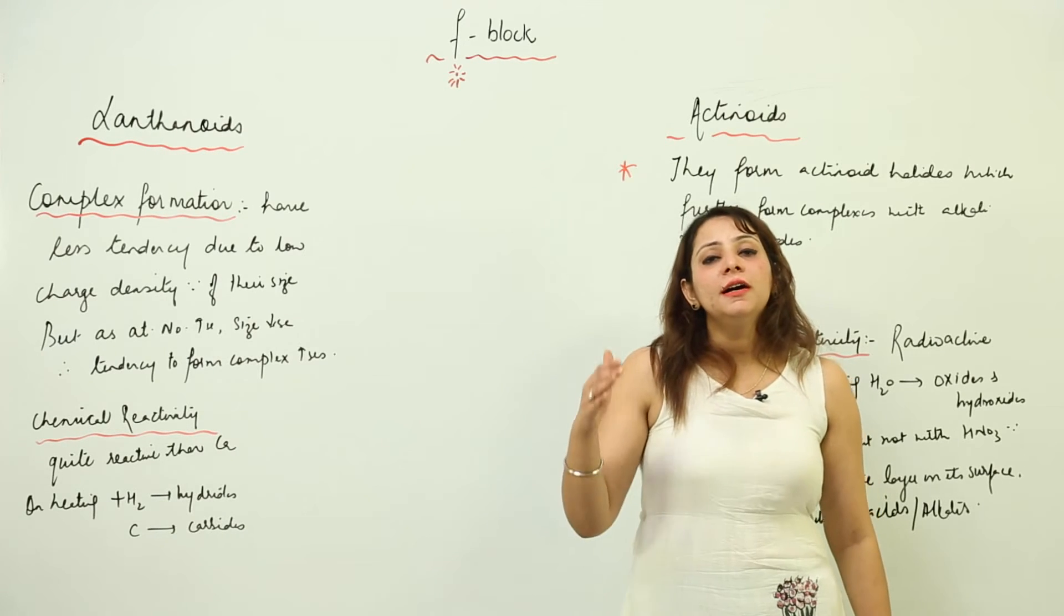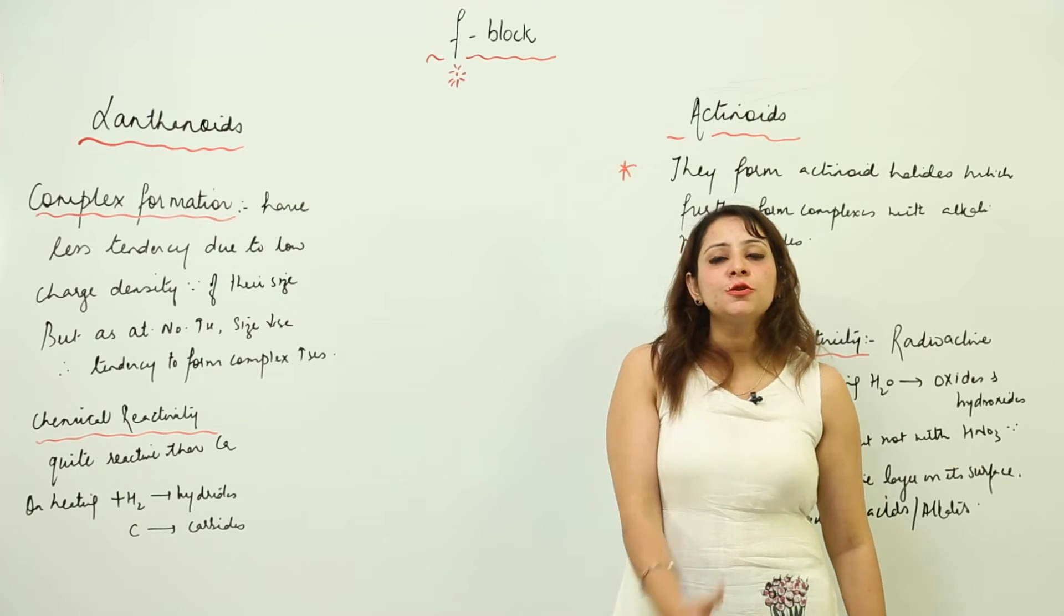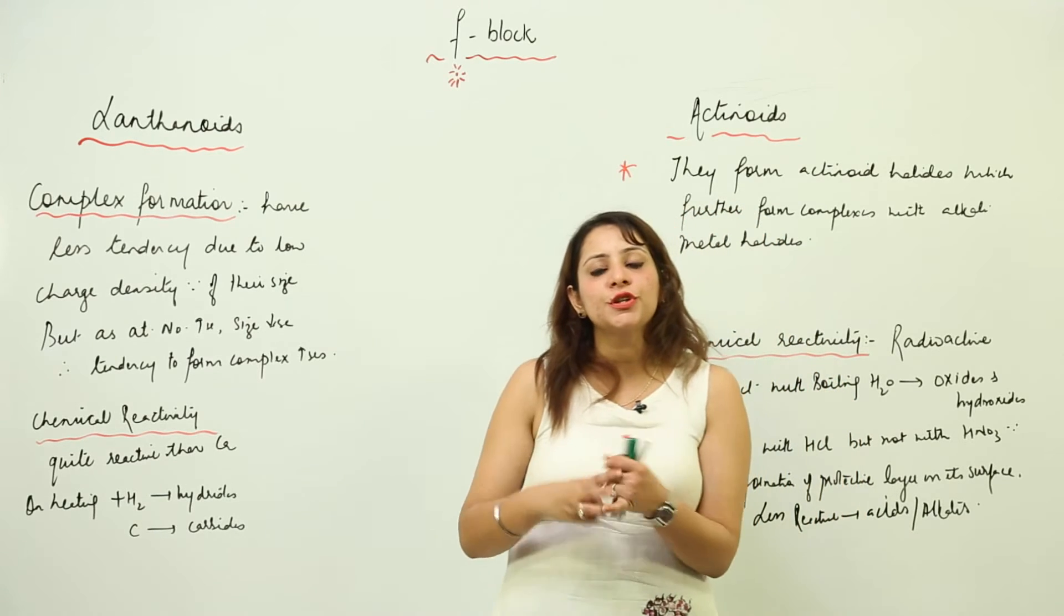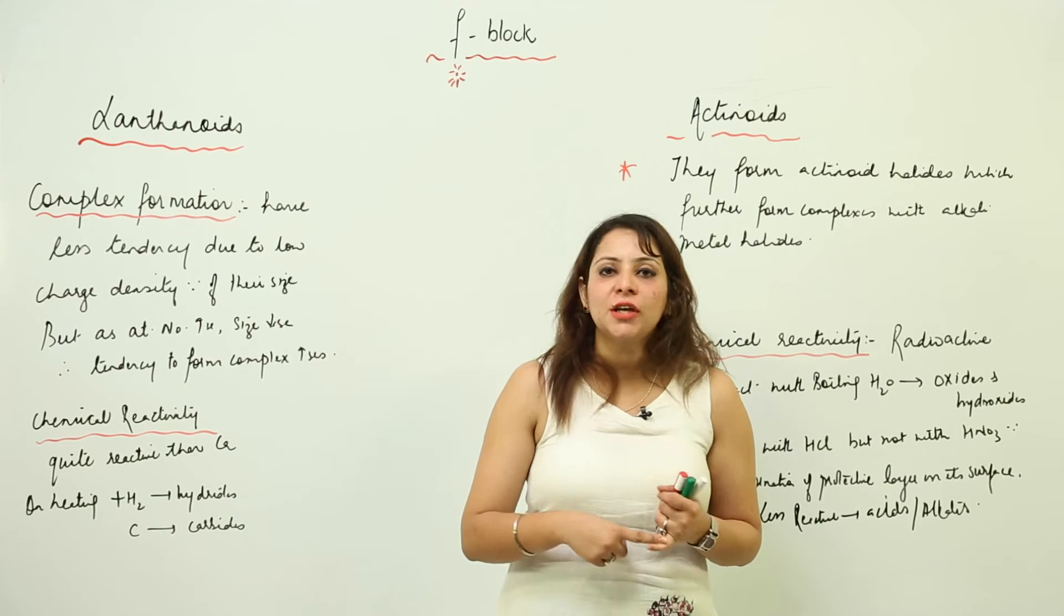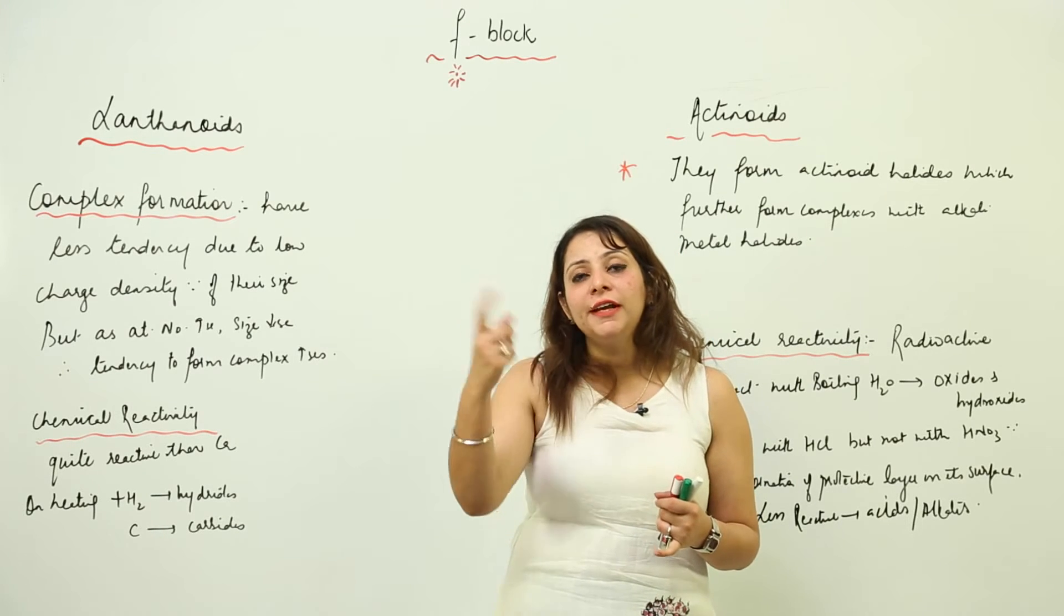Keep in mind, for a metal or substance to form complexes, the three conditions which are required are vacant orbitals, small size, and high charge density. If any metal is fulfilling all these three conditions, that means it has a tendency to form complexes.